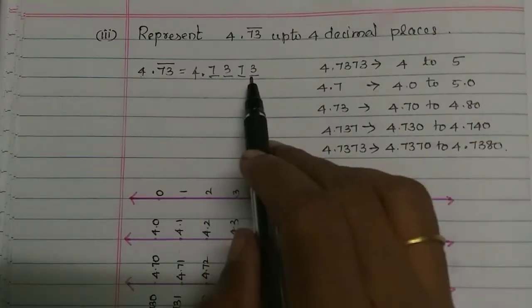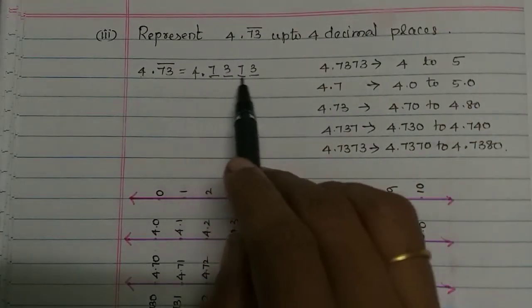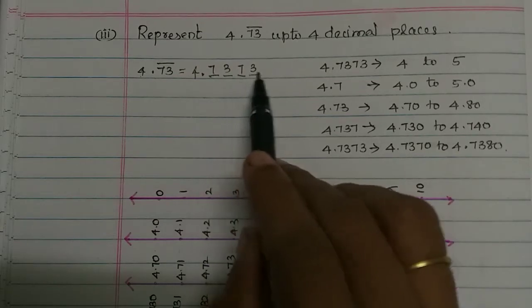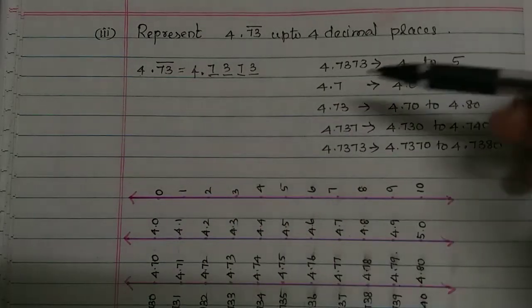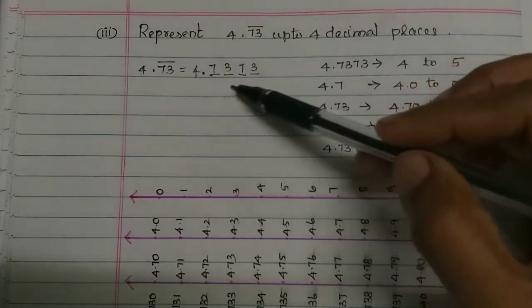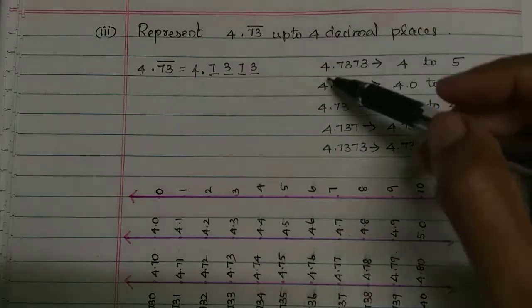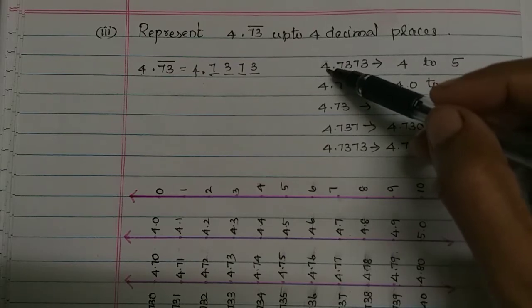We have 4 decimal places. In total, we have 5 digits in this number. Then we have 5 number lines. First, the whole number is 4.73 and 7373. The whole number is 4.